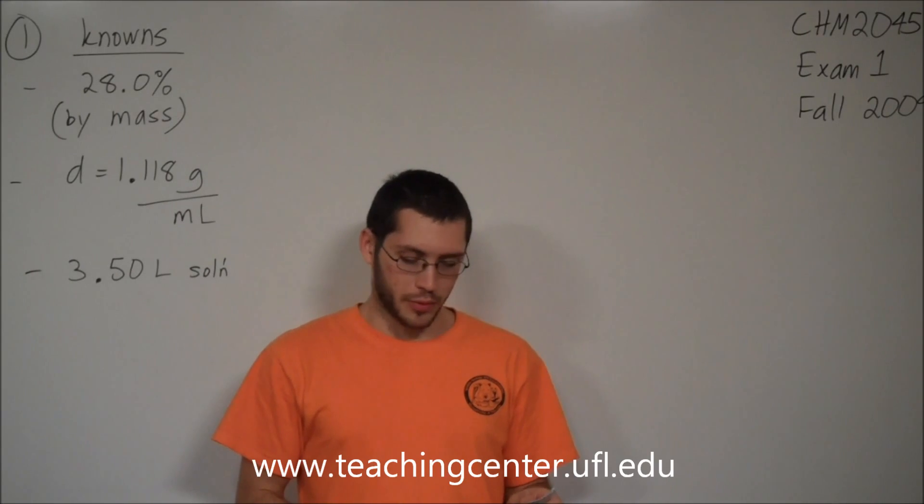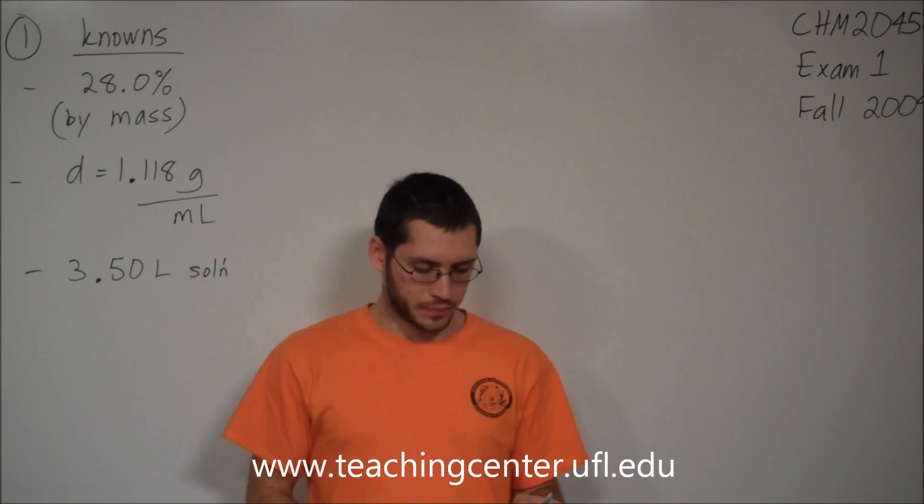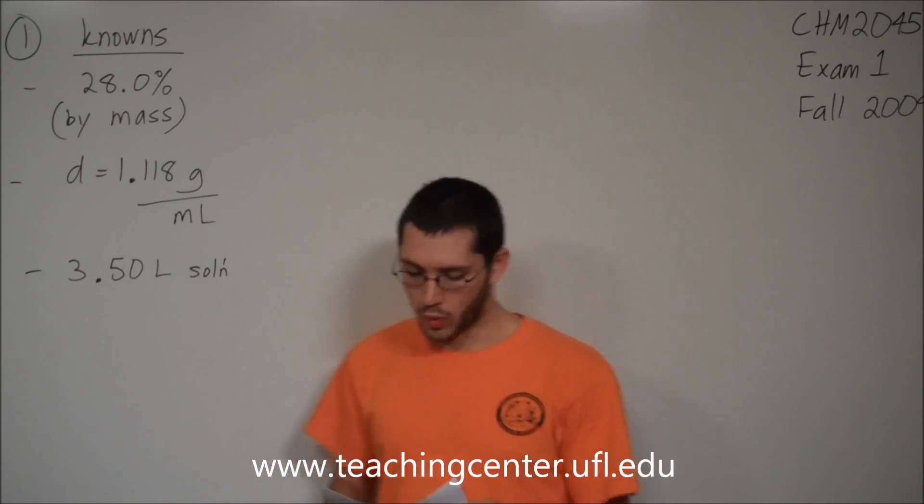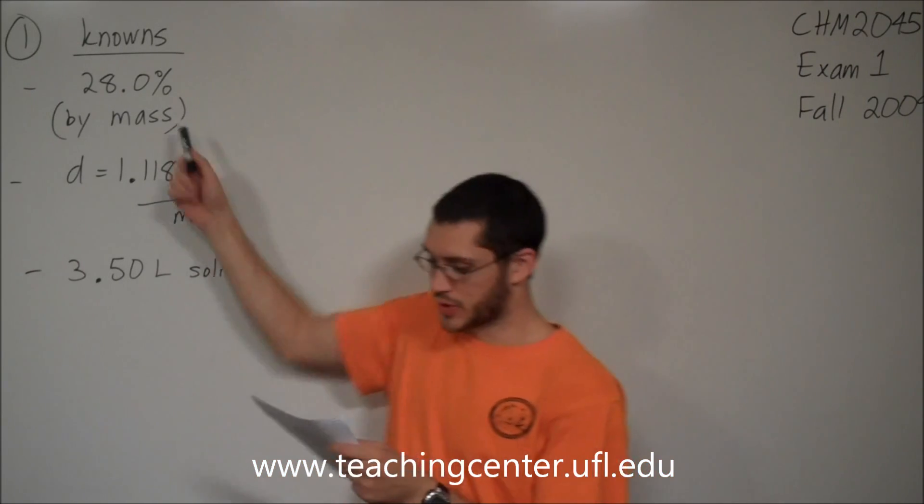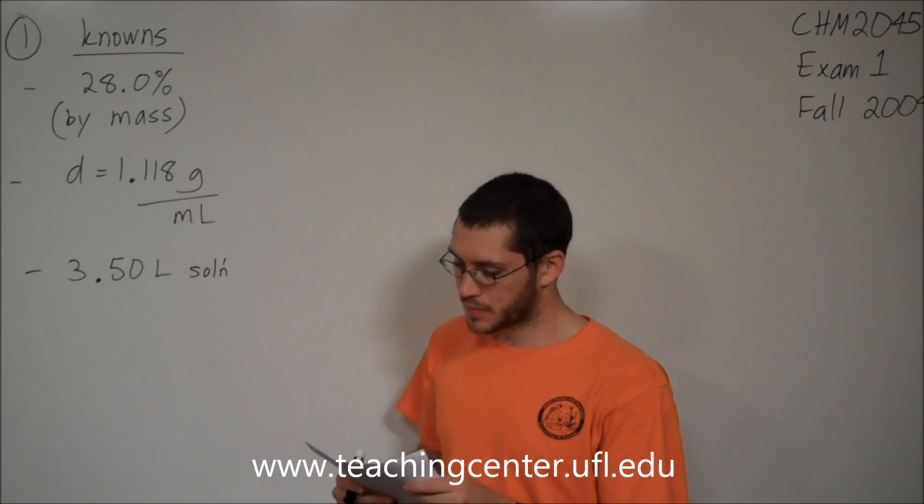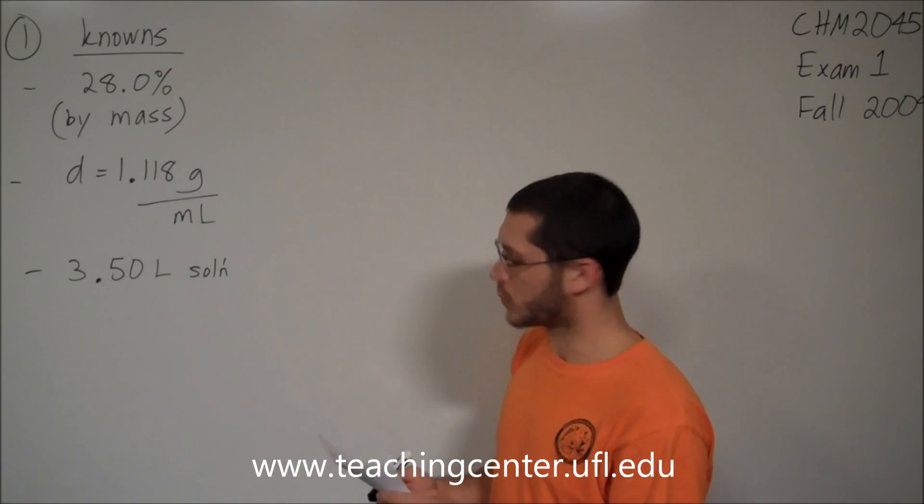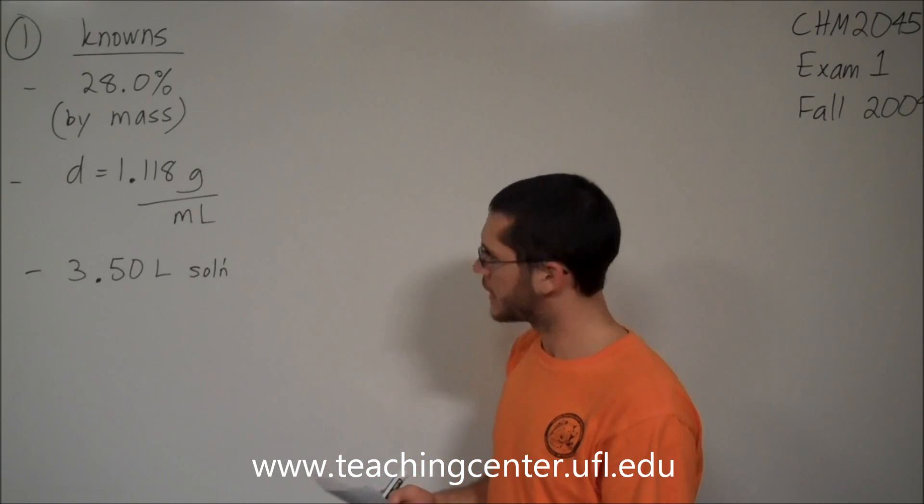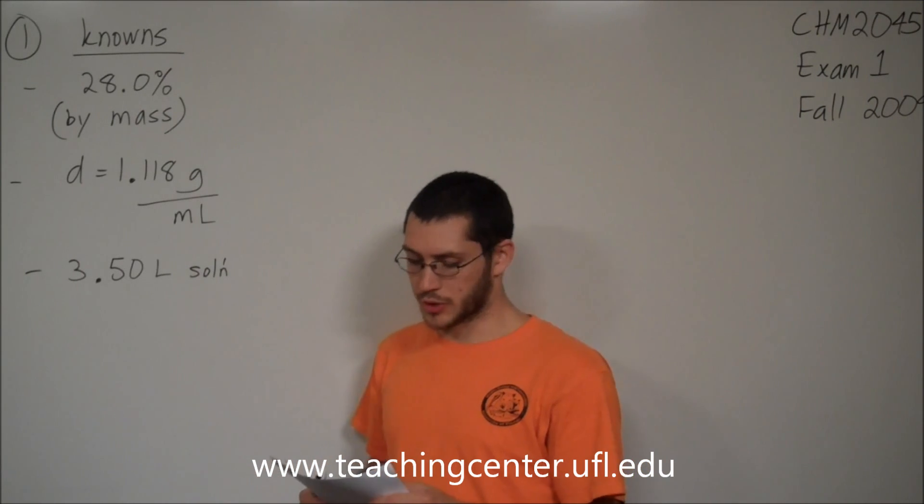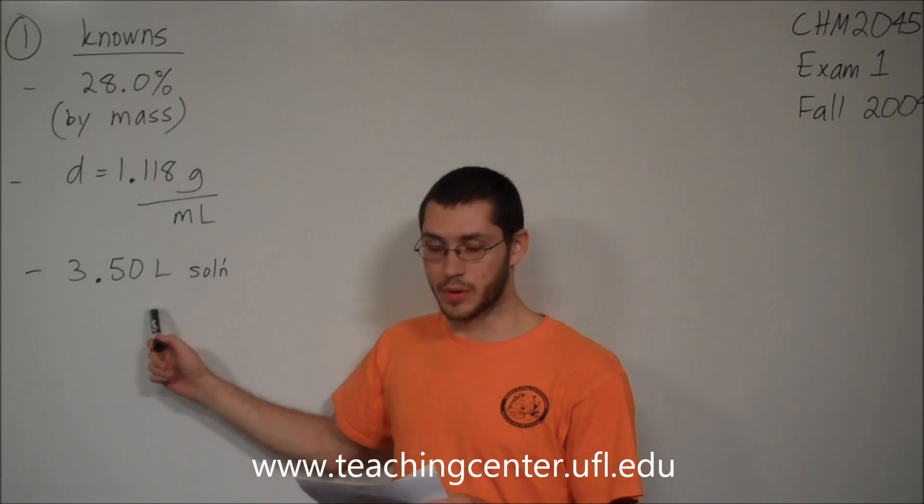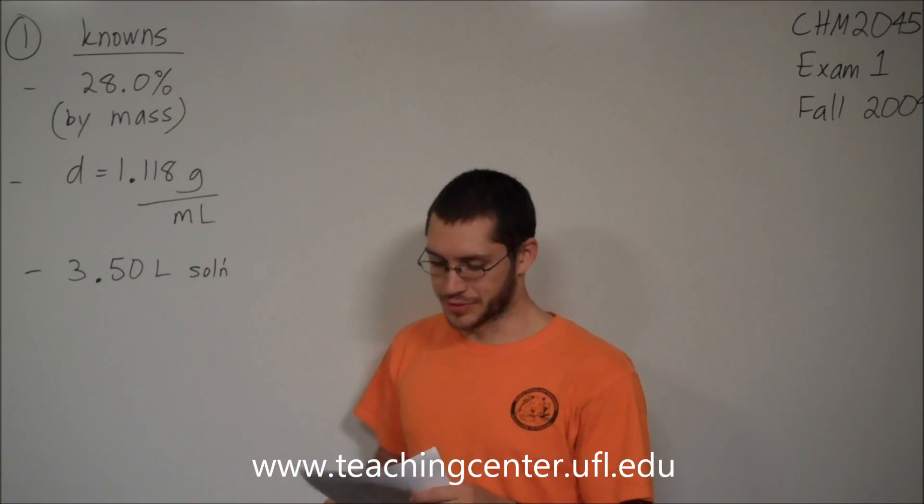Exam 1, Chem 2045, number 1. A solution of sucrose in water is 28.0% sucrose by mass and has a density of 1.118 grams per ml. What mass of sucrose in grams is contained in 3.50 liters of solution?